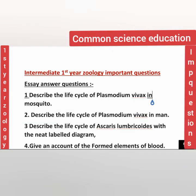Hello students, welcome back to my channel Common Science Education. I hope you all are safe and healthy. In the next video, I mentioned the September 15th first year and second year betterment exam. So now starting this video, for first year zoology, with only selected questions, here is how to score above 45 to 50 marks.